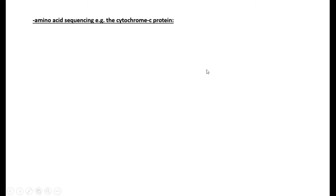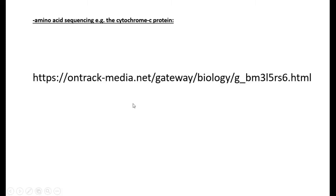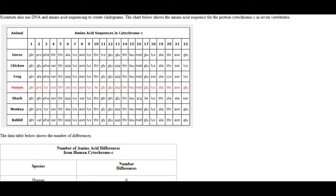I'm going to use this internet site, ontrackmedia.net, because this site has a really nice example with the cytochrome c protein to show how you can build phylogenetic trees with it. We're going to have a look at this example to in the end build a phylogenetic tree and also to show you that you can have differences in protein sequences, in the amino acid sequences of proteins.